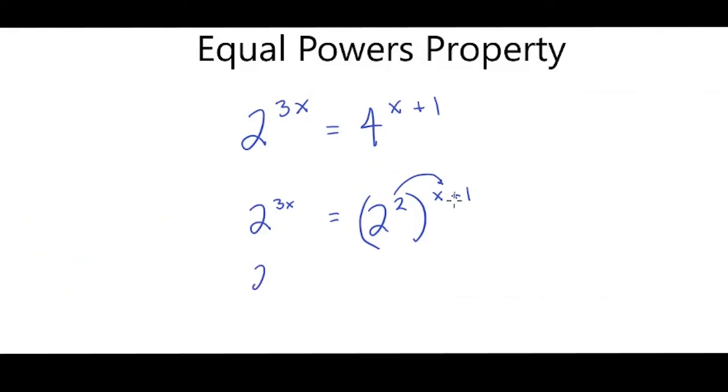So I get 2 to the 3x is equal to 2 to the 2x plus 2 because I did distributive property on this 2 here to this entire expression. Now our bases are the same.